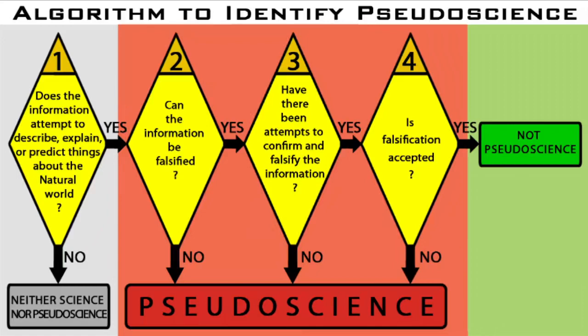And if the information cannot be proven wrong, that means the information cannot be metaphorically killed, and that means the information is not falsifiable.